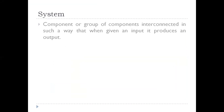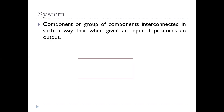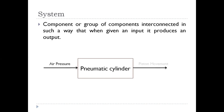What is a system? A system is a component or group of components interconnected in such a way that when given an input it produces an output. In simple words, a system can be thought of as a box which will give an output when supplied with an input. For example, a pneumatic cylinder can be considered as a system because we give air pressure as input and we get piston movement as the output.